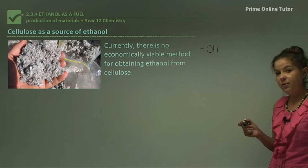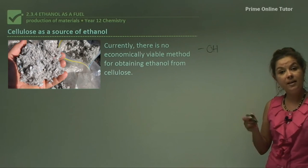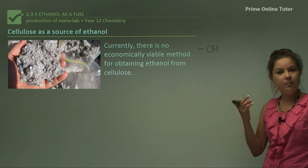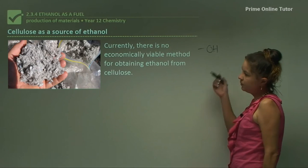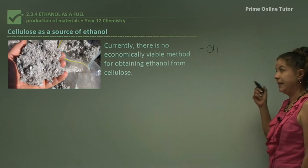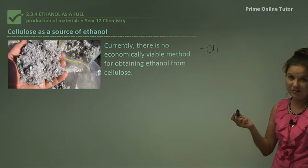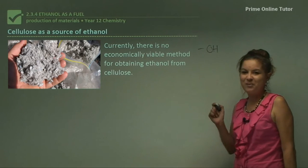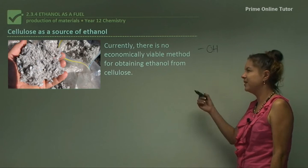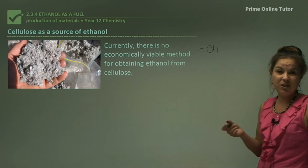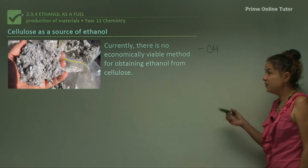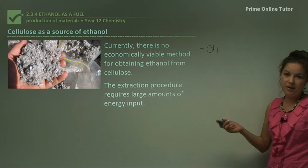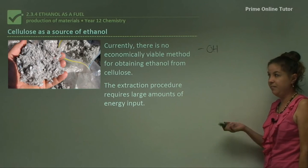Cellulose is also a source of ethanol — and remember, cellulose is the most abundant organic molecule in the world and makes up the cell walls of plants. Unfortunately, there is currently no economically viable method for obtaining ethanol from cellulose; it's just too expensive. It's actually cheaper to use fossil fuels. The extraction procedure requires large amounts of energy input, which translates to large costs, making it less likely we would extract ethanol this way.